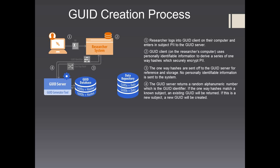The GUID server returns a random alphanumeric number, which is the GUID identifier. If the one-way hashes match a known subject, an existing GUID will be returned. If this is a new subject, a new GUID will be created.